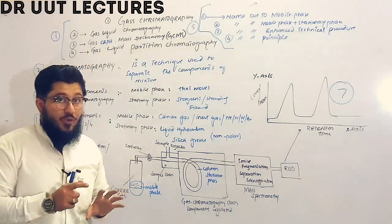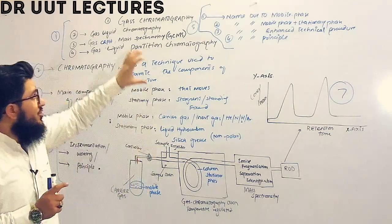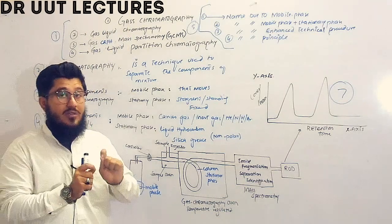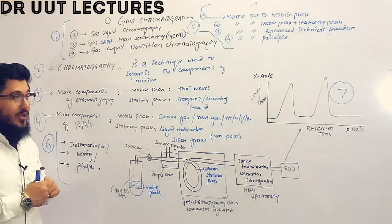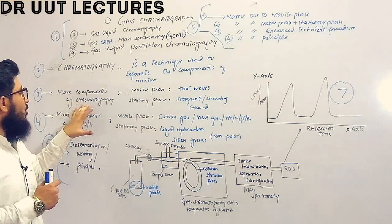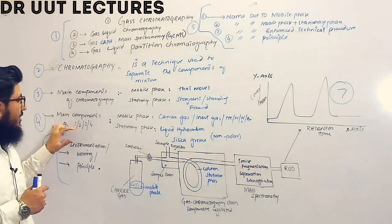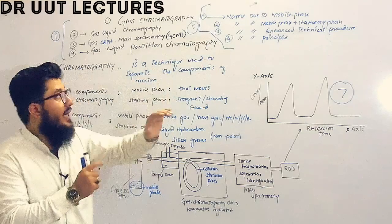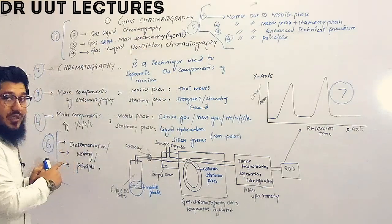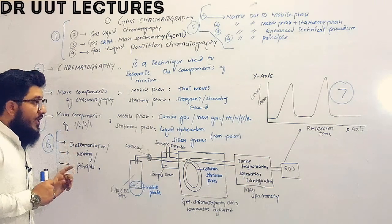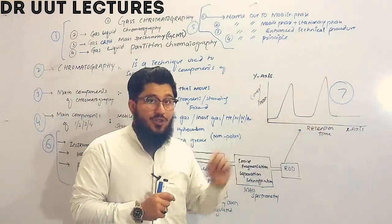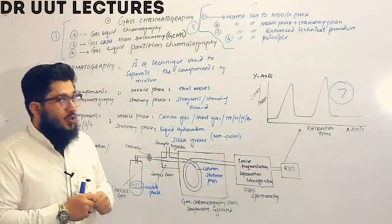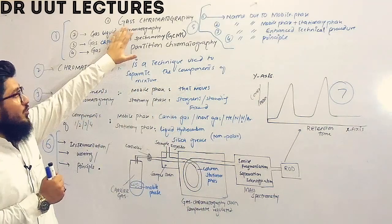We will discuss this lecture in seven portions. The first portion covers an introduction, the second covers what chromatography is, the third covers the main components of chromatography, the fourth covers the main components of gas chromatography, the fifth covers the logic behind the names, the sixth covers instrumentation and working principle, and the seventh covers the graphical representation of results.